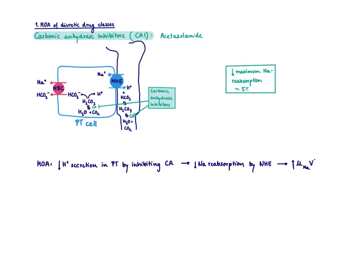Let's start with the carbonic anhydrase inhibitors — an example is acetazolamide. They block carbonic anhydrase, which is important for generating carbonic acid from water and CO2. If carbonic anhydrase is blocked, you don't generate protons and bicarbonate. Without protons, the NHE can't work, because it pumps protons out and takes sodium back. Therefore, carbonic anhydrase inhibitors indirectly block NHE and block sodium reabsorption in the proximal convoluted tubule.